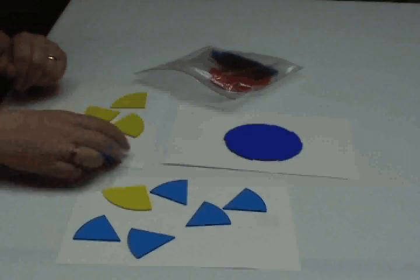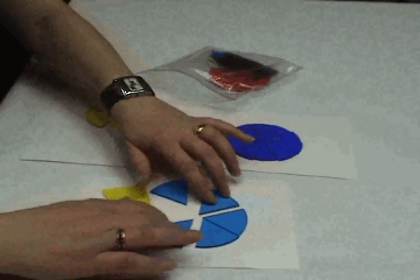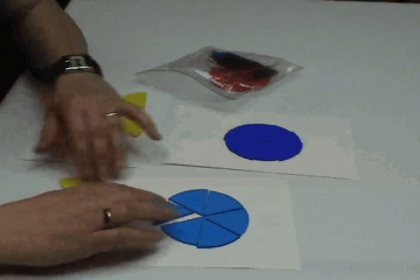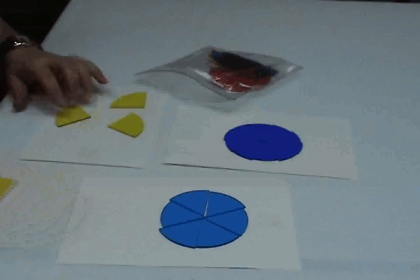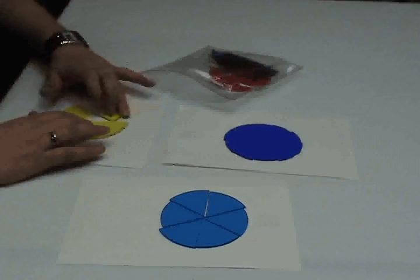To discourage off-task behavior during instruction, allow the students to familiarize themselves with the circles. For teachers concerned with losing pieces, have the students reassemble the circles before putting the circles back in the bag.